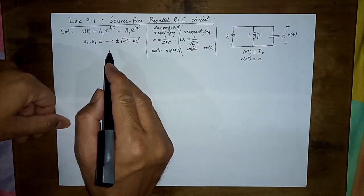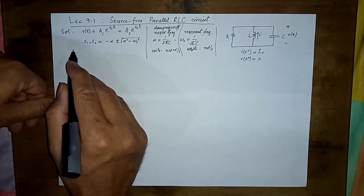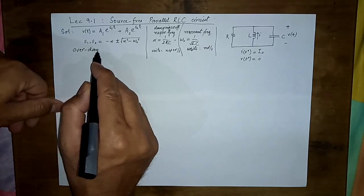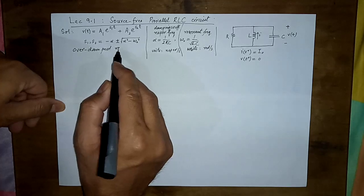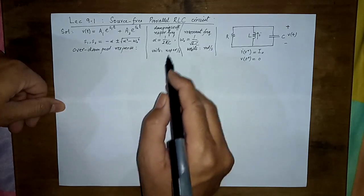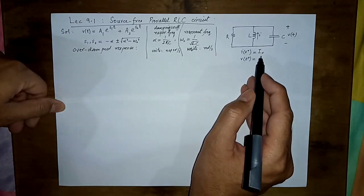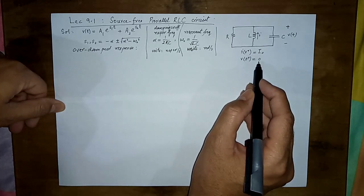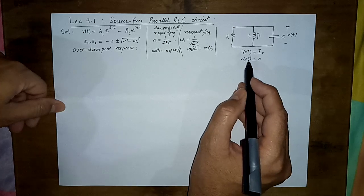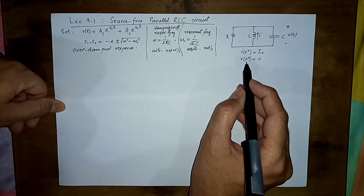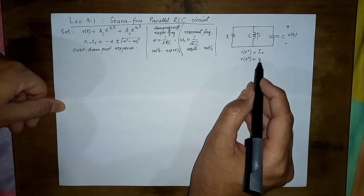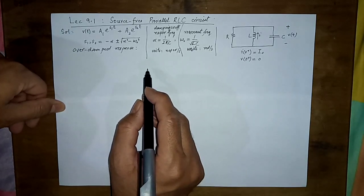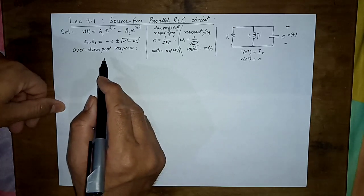Let us find and solve the case for the over-damped response. This is the same parallel RLC circuit we have been looking at, with the initial current in the inductor i_naught and the initial voltage across the capacitor equal to zero — so only the inductor is energized, although the capacitor voltage can be taken as some value v_naught other than zero.